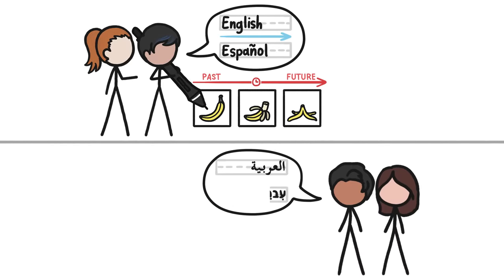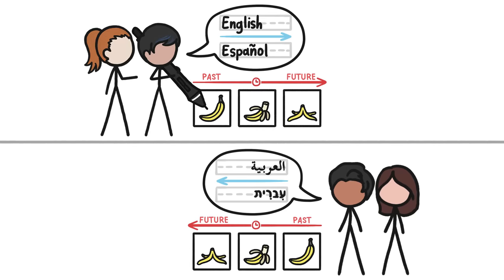Yet people who speak Arabic, Hebrew, and other right to left languages generally represent time as unfolding from right to left. Earlier images go here and later ones here.